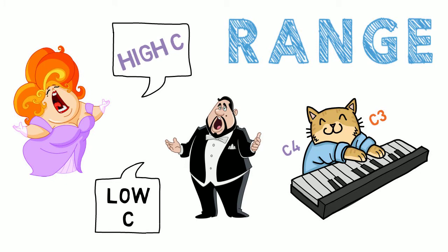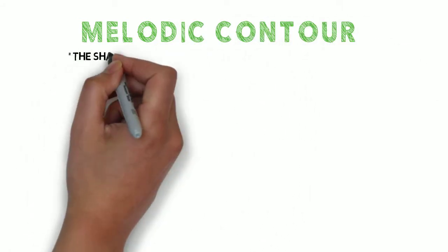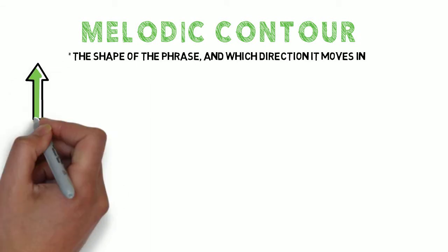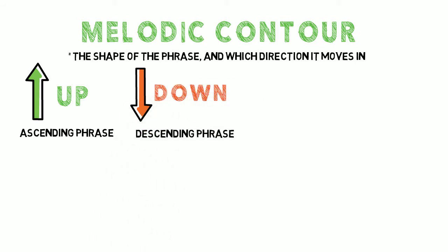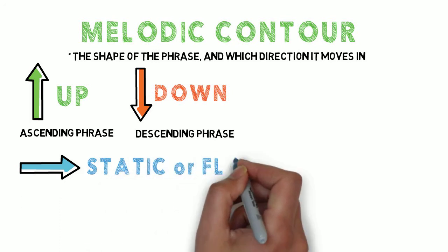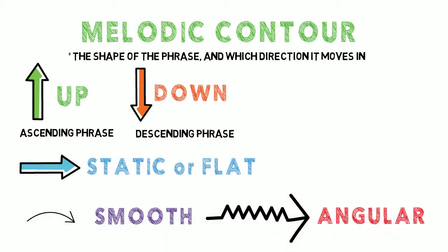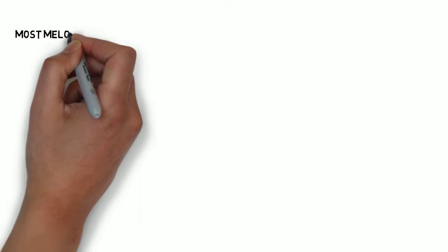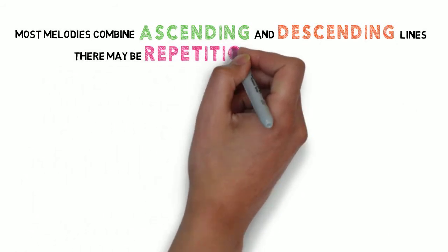Here are a few more things to consider in your analysis. The contour — you should comment on the shape of the phrase and which direction it moves in. It could go up, an ascending phrase, or go down, a descending phrase. It could also be quite static or flat, which means it doesn't really ascend or descend very much. You should also say if the melody is smooth or angular. To get an idea about the shape, think of how it would look if you connected the dots, like in one of those puzzles for children.